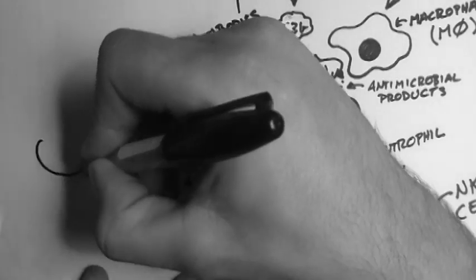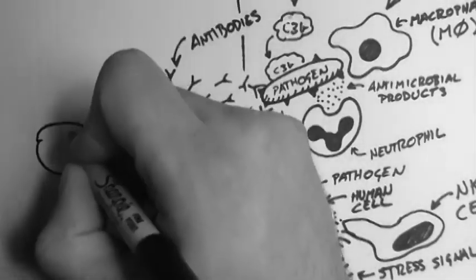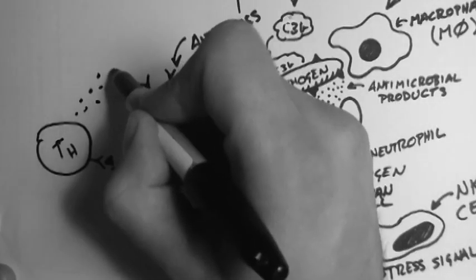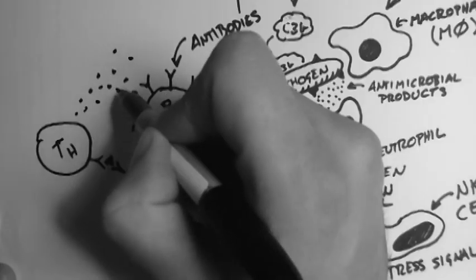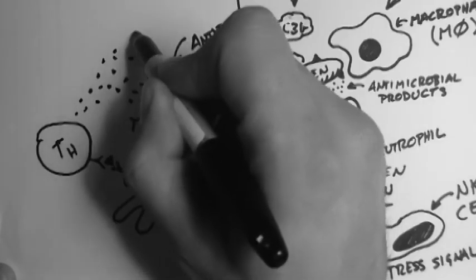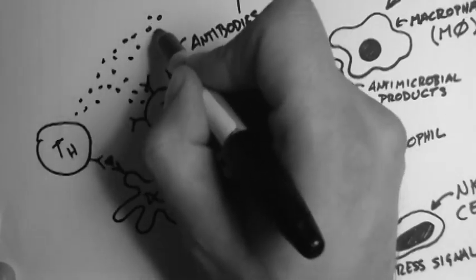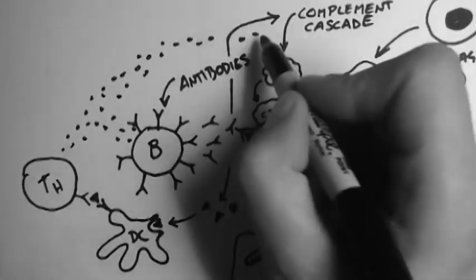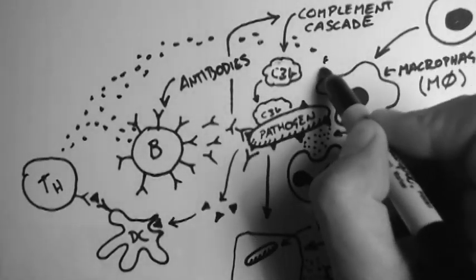And T cells, of which there are two types—this is a T helper cell—can then be induced to release chemicals that allow the B cells to do their job better, and also encourage macrophages and neutrophils to arrive on the scene.